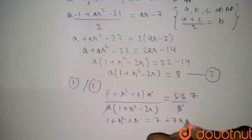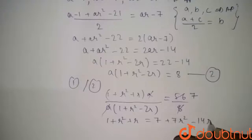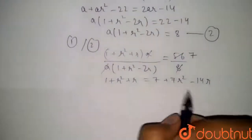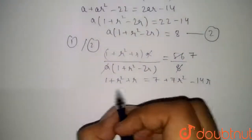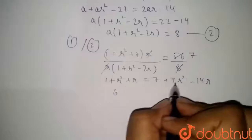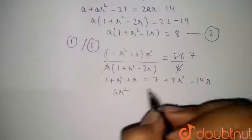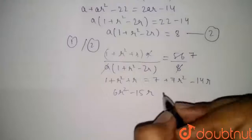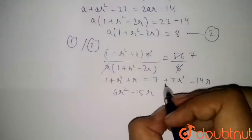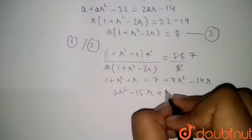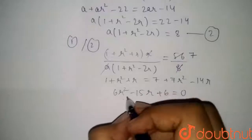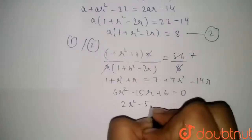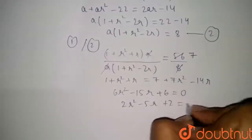Expanding: 1 + r² + r = 7 + 7r² − 14r. Simplifying: 6r² − 15r + 6 = 0, which can be written as 2r² − 5r + 2 = 0.